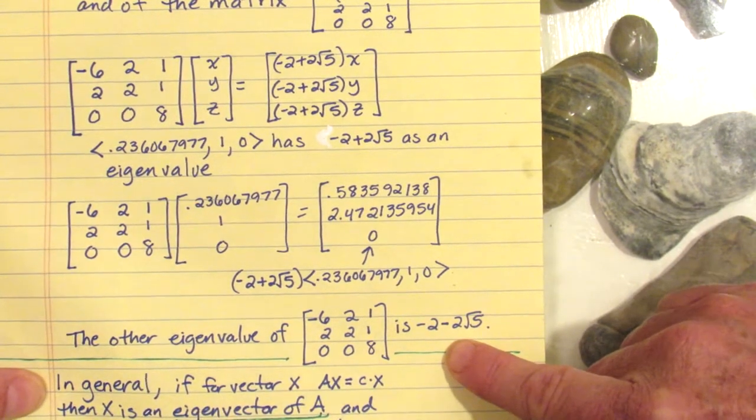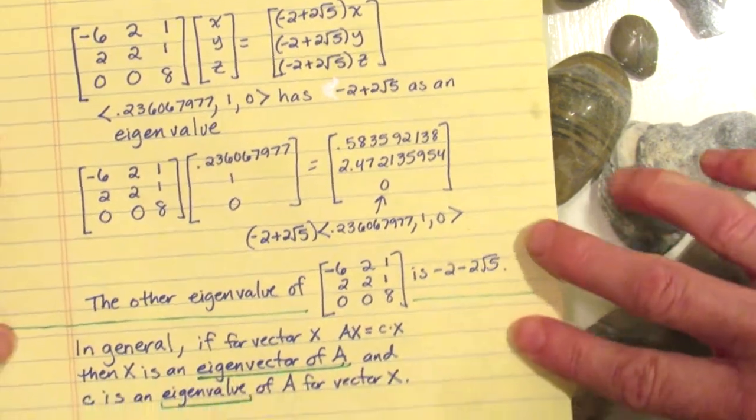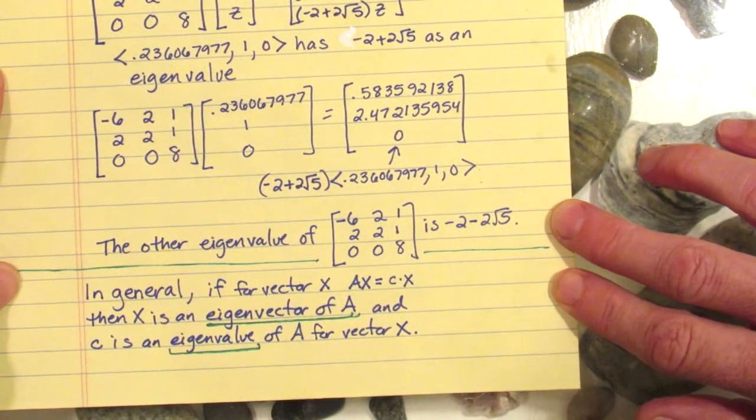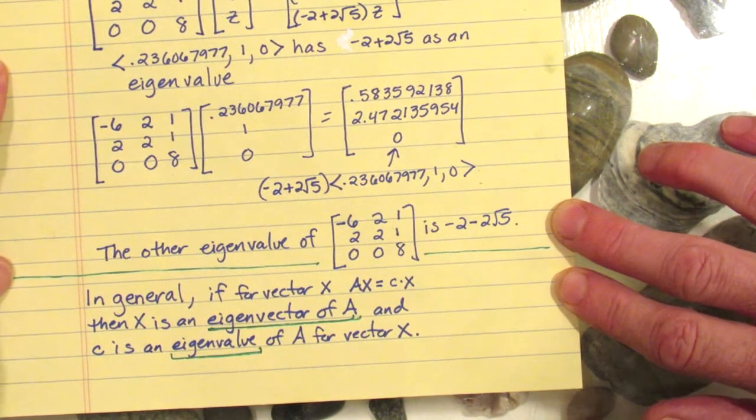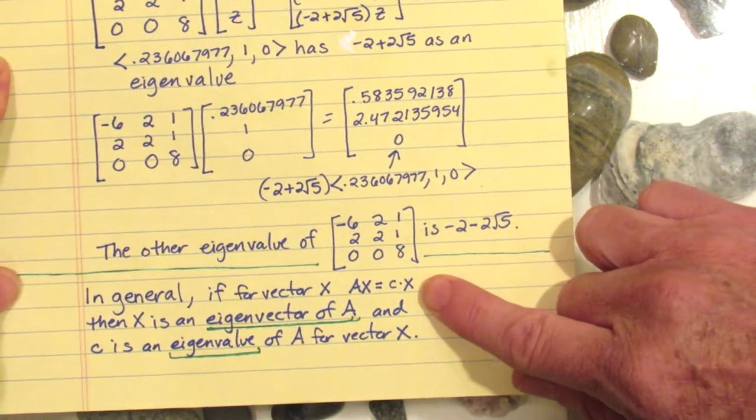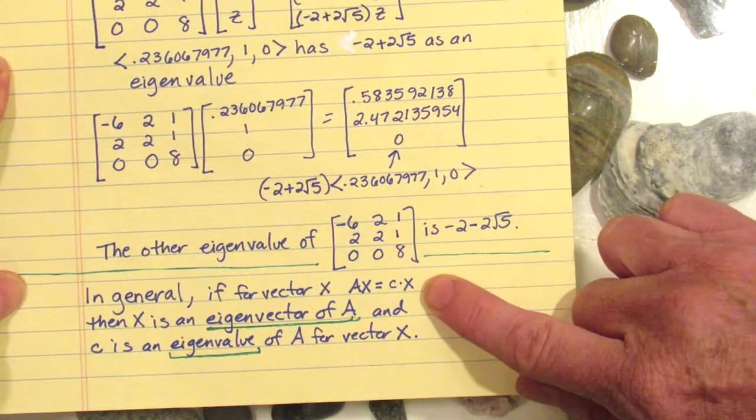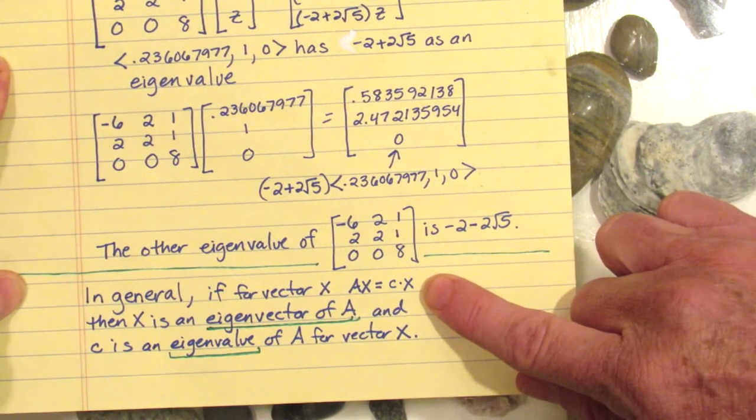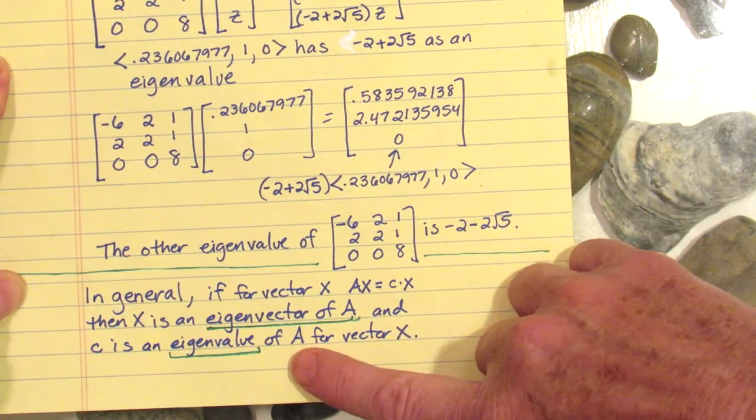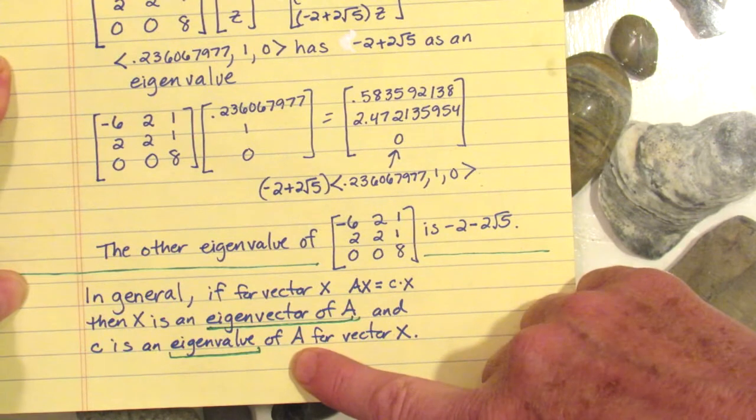So in general, if a vector x is such that there is some matrix A times x, and A times x gives you a constant multiple of the vector x, then x is an eigenvector of A and c is its eigenvalue. We also will say that c is an eigenvalue for the original matrix.